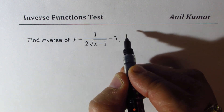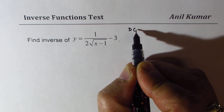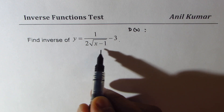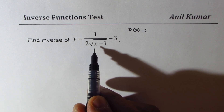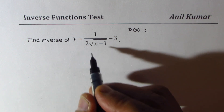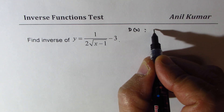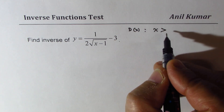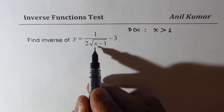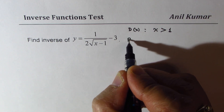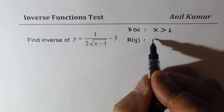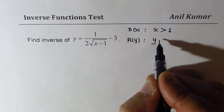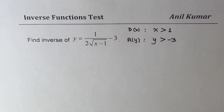We always begin by writing the domain and range of the given function. For this function, the denominator cannot be 0 and within the square root it has to be greater than 0, so the value of x must be greater than 1 — it cannot equal 1. As for the range, y will always be greater than minus 3.